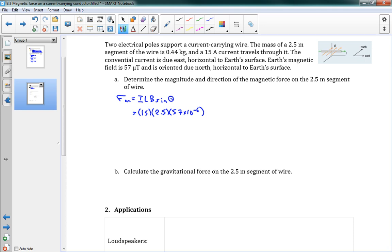Okay, so we have 57 microteslas, and then we have our angle. Sine of, our angle was, let me just see here. Oh, right, so we've got due east, due north. So our angle between those two is going to be 90 degrees. This gives us 2.1 times 10 to the negative 3 newtons. That's our force.